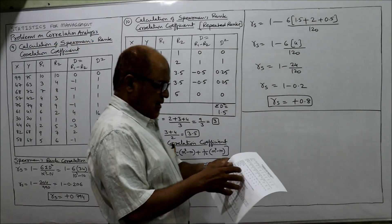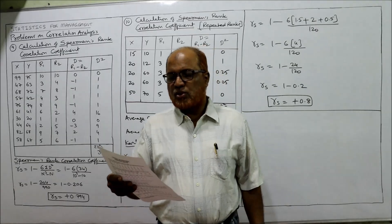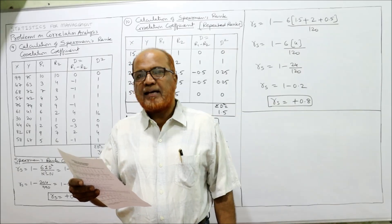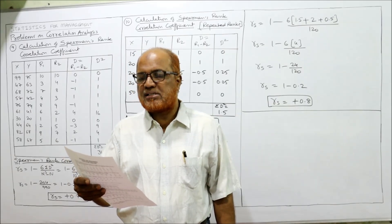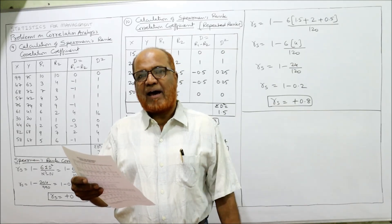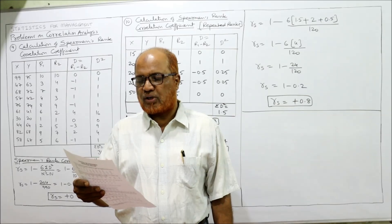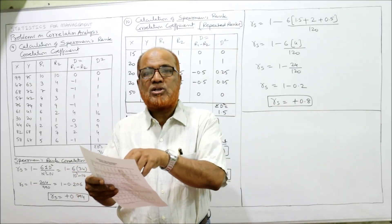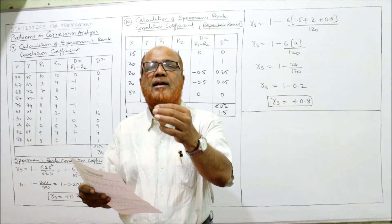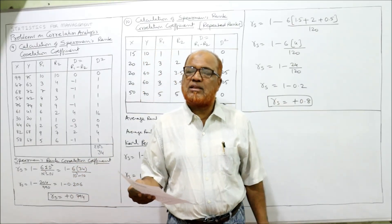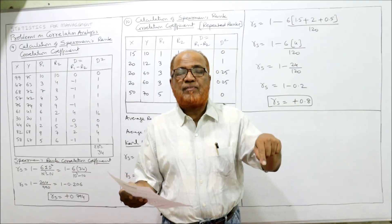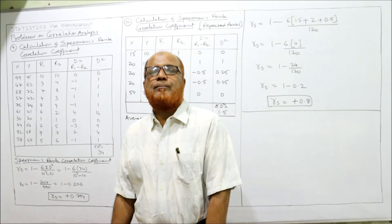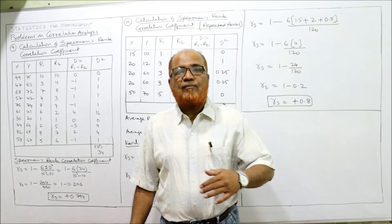Now see the ninth problem: calculate the rank correlation coefficient from the following data. X values are given as 99, 47, 68, 57, and so on. Y values are given as 75, 63, 72, 42, and so on. If the word 'rank correlation' was not given, we would use Carl Pearson's method. Here, ranks are not given in the problem — this is the first problem where we have to assign the ranks.